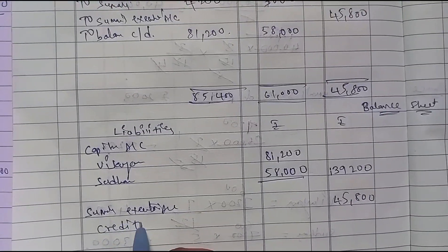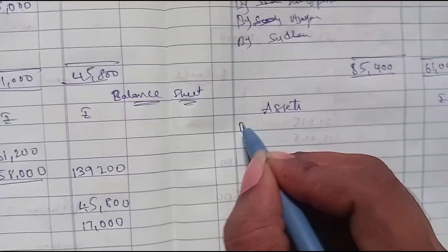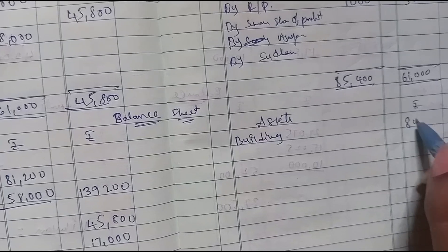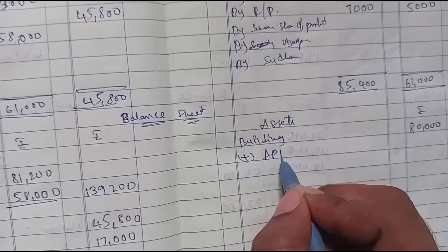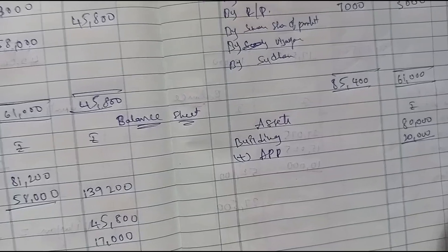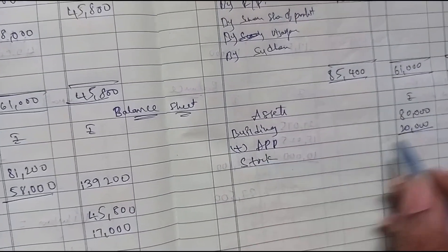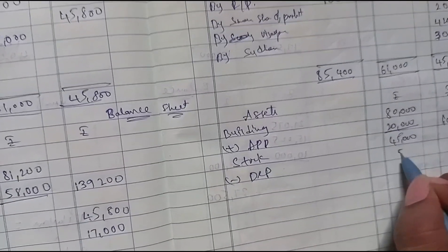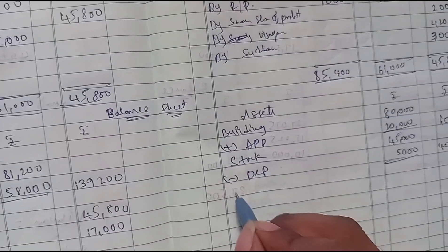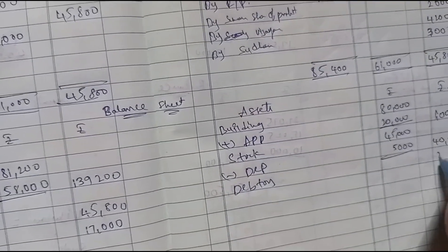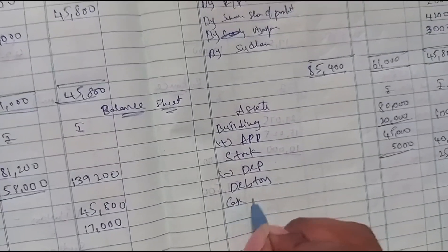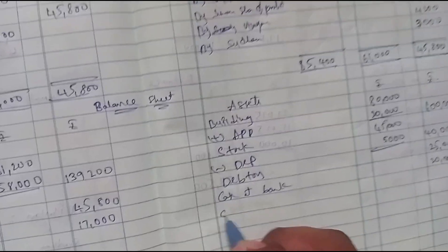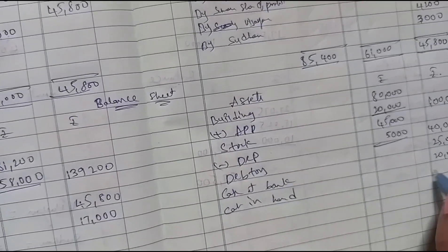In the final balance sheet, liabilities include creditors 17,000. Assets include: Building — balance sheet value 80,000, add appreciation 20,000, giving 1,00,000; Stock minus depreciation 5,000, giving 40,000; Debtors 25,000; Cash at bank 20,000; Cash in hand 15,000.